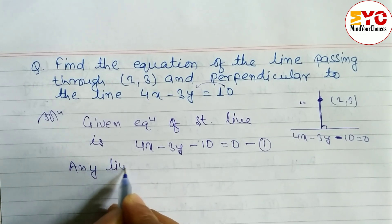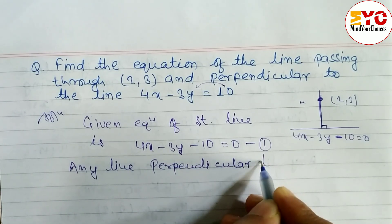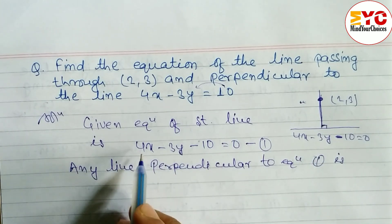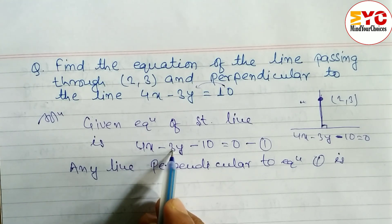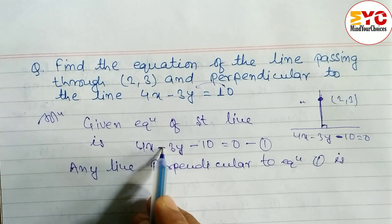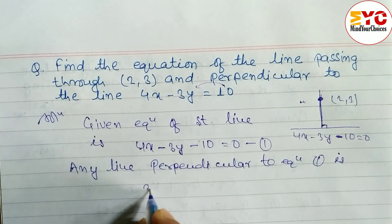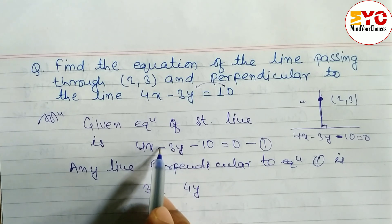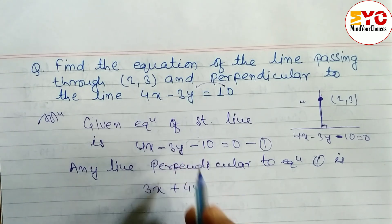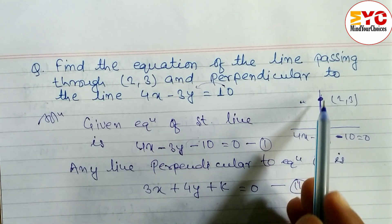Any line perpendicular to equation 1 is found by interchanging the coefficients of x and y. In place of 4 we write 3, and in place of 3 we write 4. We also change the sign: in place of minus we write plus. So we get 3x plus 4y plus k is equal to zero — this is equation 2, the equation of the required line.